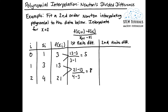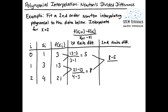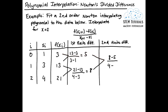Now we solve for the second finite difference. We take the difference between the two first finite difference values: (8 minus 5). For the x values, we follow the rule — going down, over, and down again to get x equals 4, then up, over, and up again to get x equals 1. So we compute 3 divided by 3, which equals 1. The second finite difference is 1.